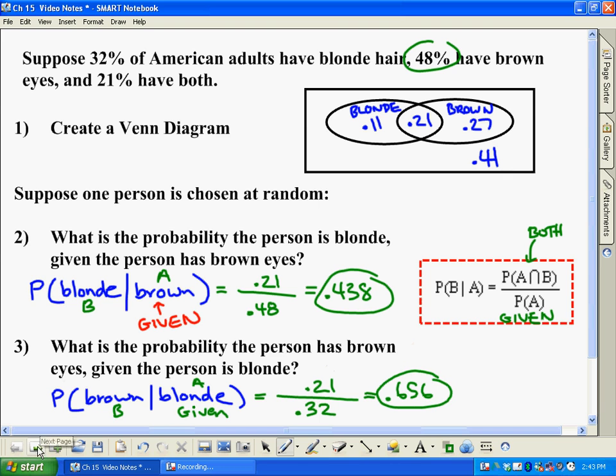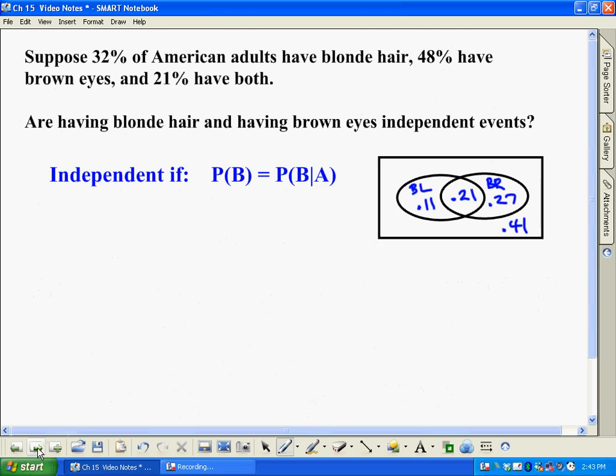All right. So the other big idea that I want to talk about in this video is the idea of what we call independent events. So once again, using the same information up here about blonde hair and brown eyes, are having blonde hair and having brown eyes independent events? In other words, does one influence the other? So this is our Venn diagram we just came up with here a minute ago. And basically it comes down to this. They are independent if the probability of the B event happening is the same as the probability of the B event happening given A has.